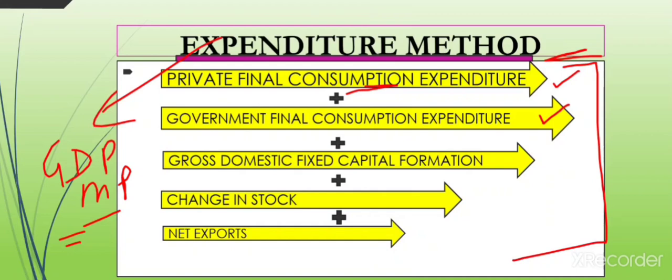The third component is Gross Domestic Fixed Capital Formation. These are the expenditures made by businesses on fixed capital, meaning fixed assets such as plant and machinery. Producers invest in fixed assets because they are used for further production, which creates income and profits.